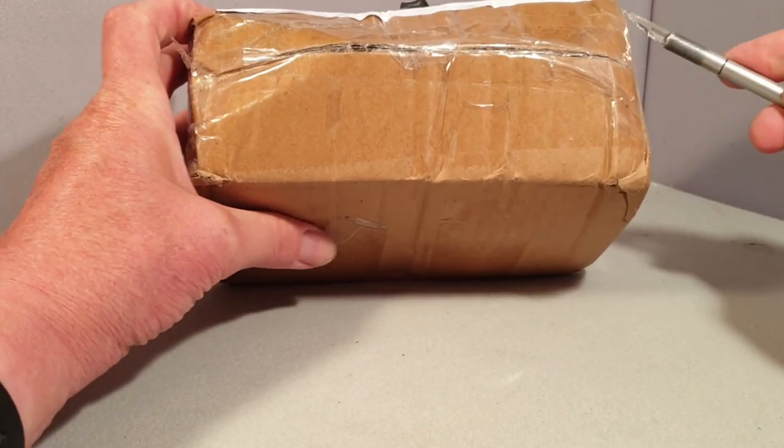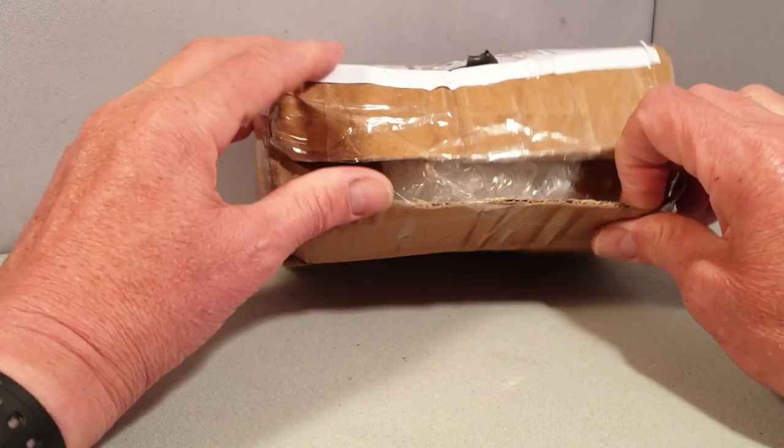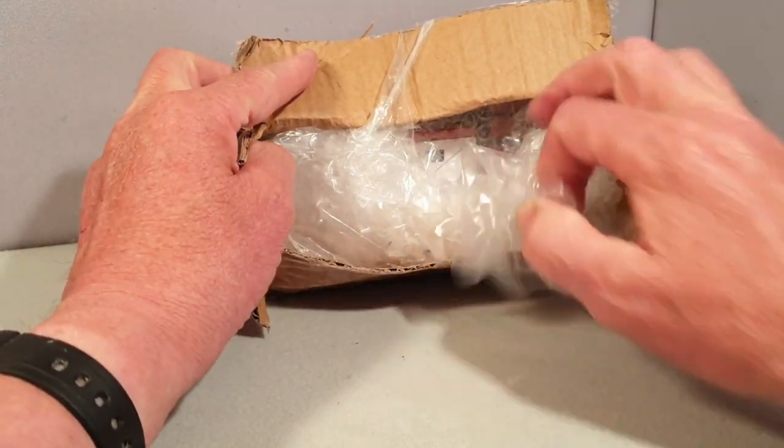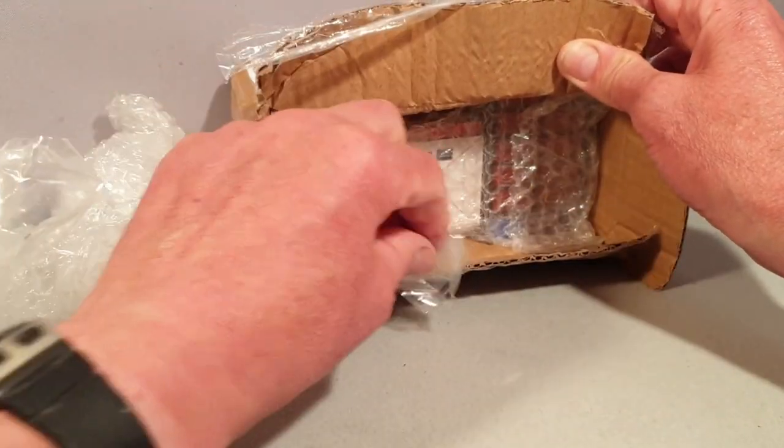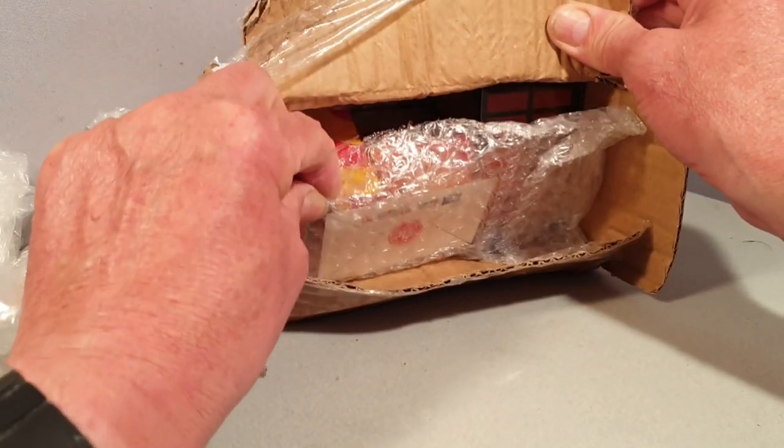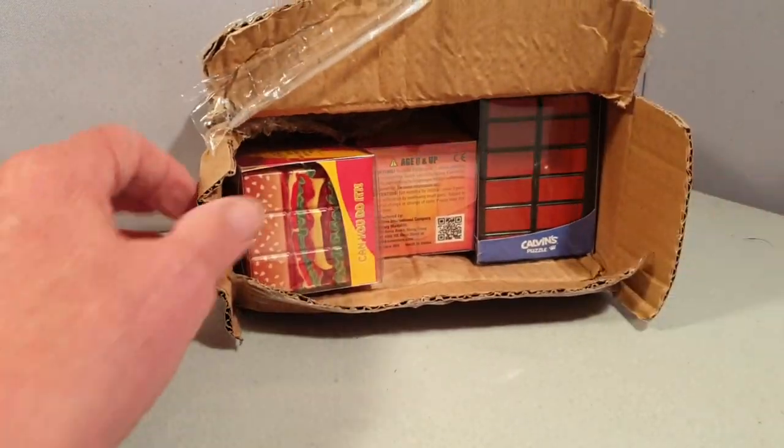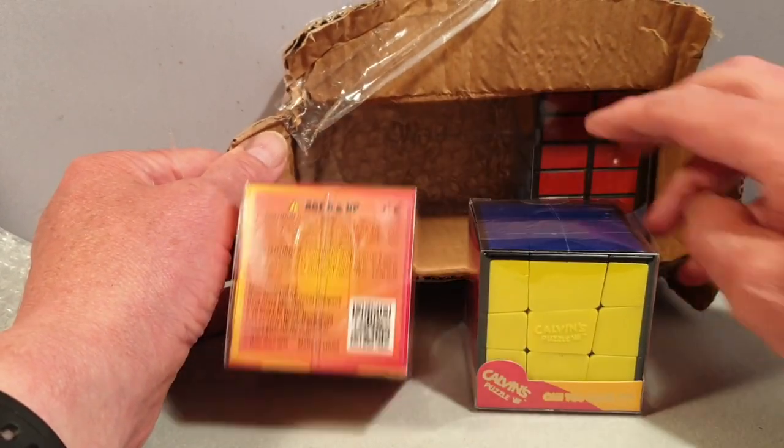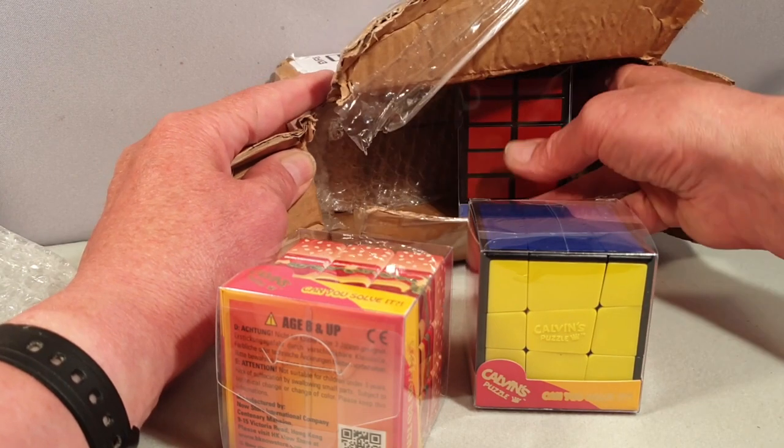It contains three puzzles that can be purchased through the links in my description. First out is a hamburger Rubik's Cube. Then there's a sloppy cube and lastly a 2x4x6 cuboid.